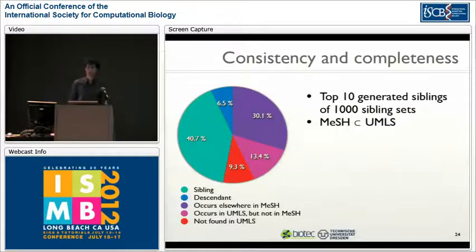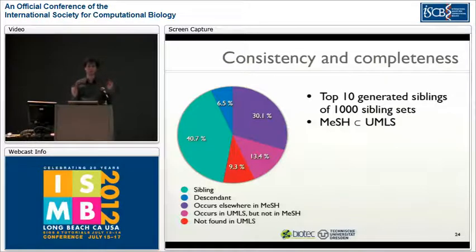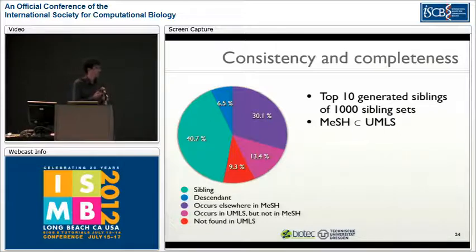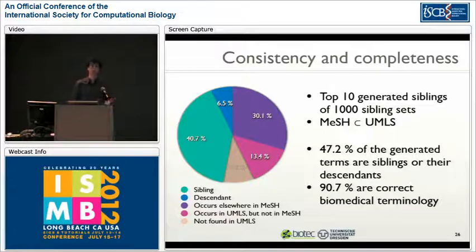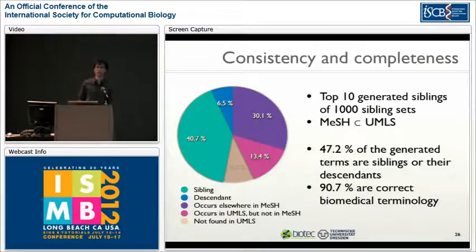We did further evaluation looking at the top 10 generated siblings across the 1,000 sibling sets — even when a set had only 5 siblings we still examined the top 10 candidates. Of those top 10, 40% were siblings and 6.5% were descendants. We also checked whether generated terms occur elsewhere in MeSH in another tree — that accounts for another 30%. Checking whether terms not in MeSH appear in UMLS, we reach 90.7% that are correct biomedical terminology when using UMLS as the reference.